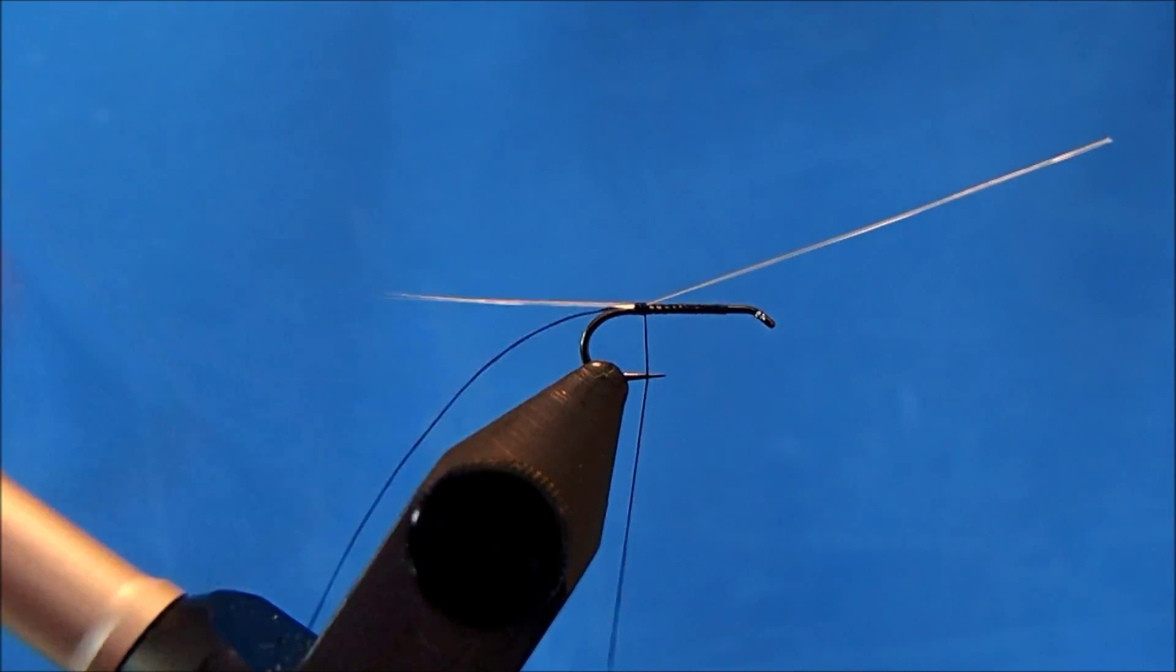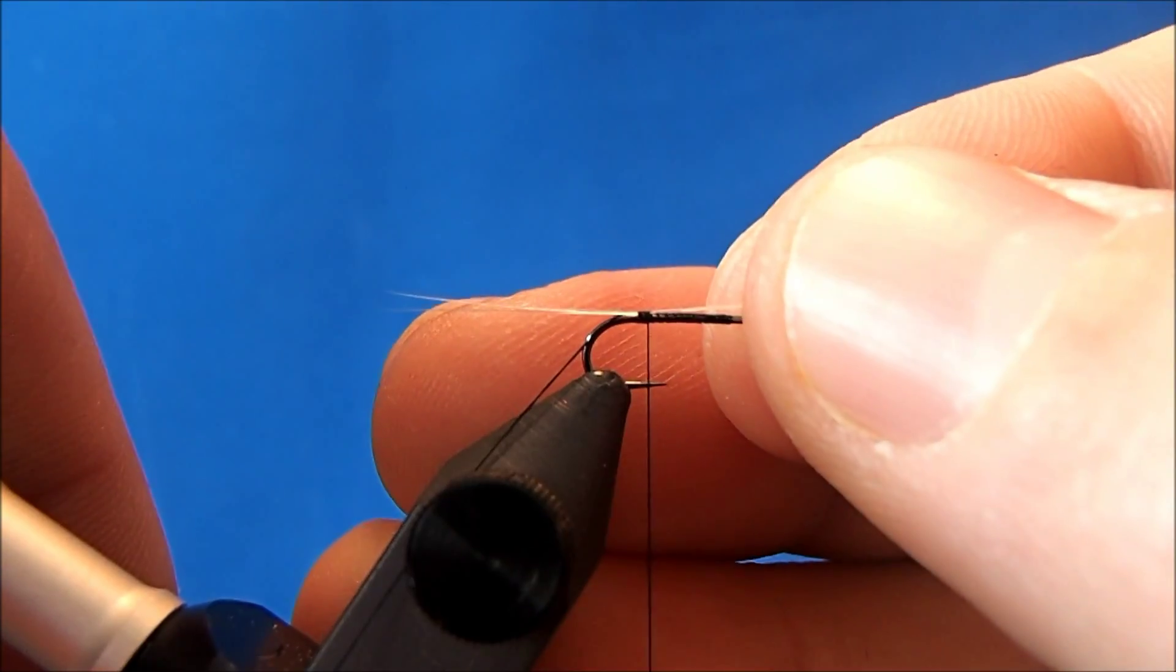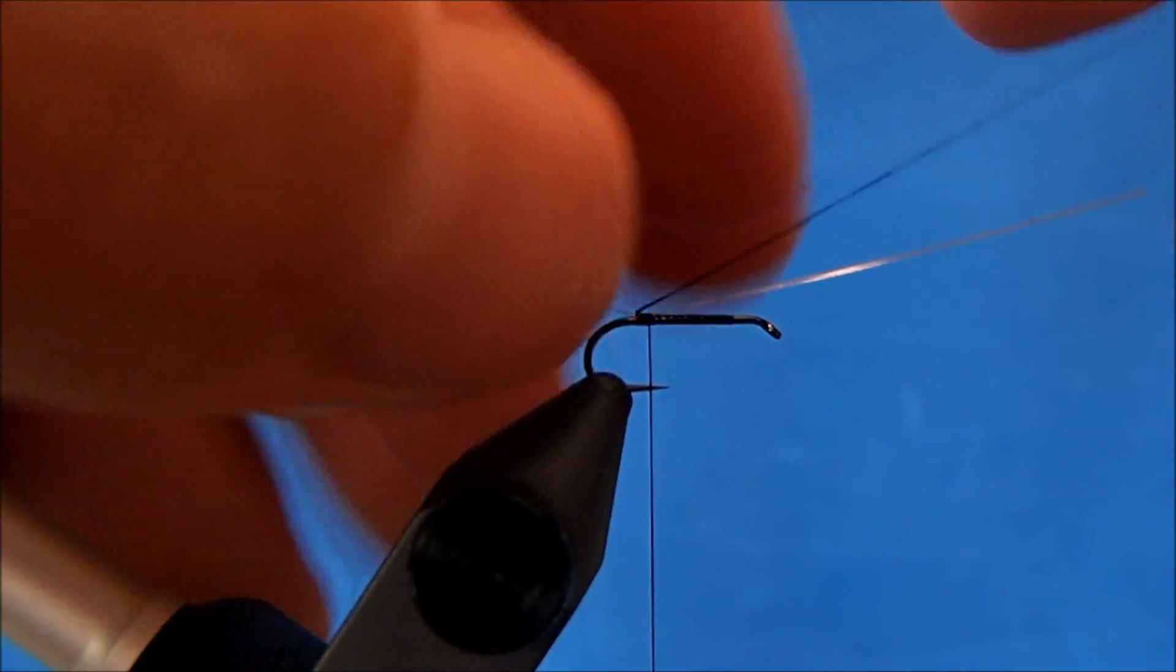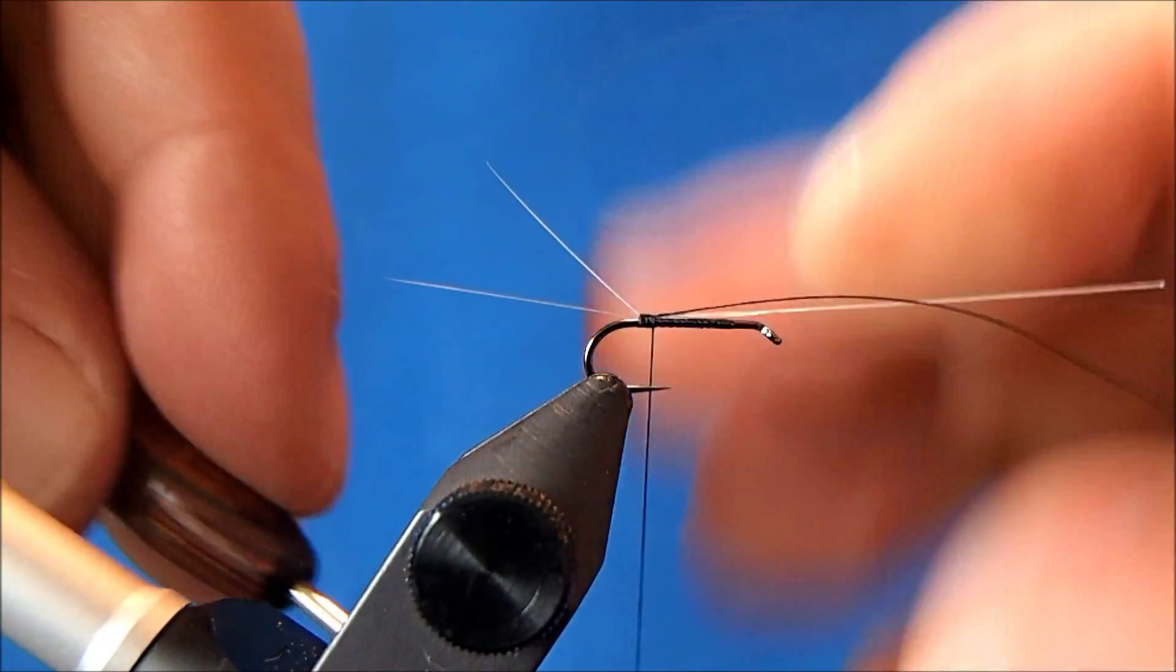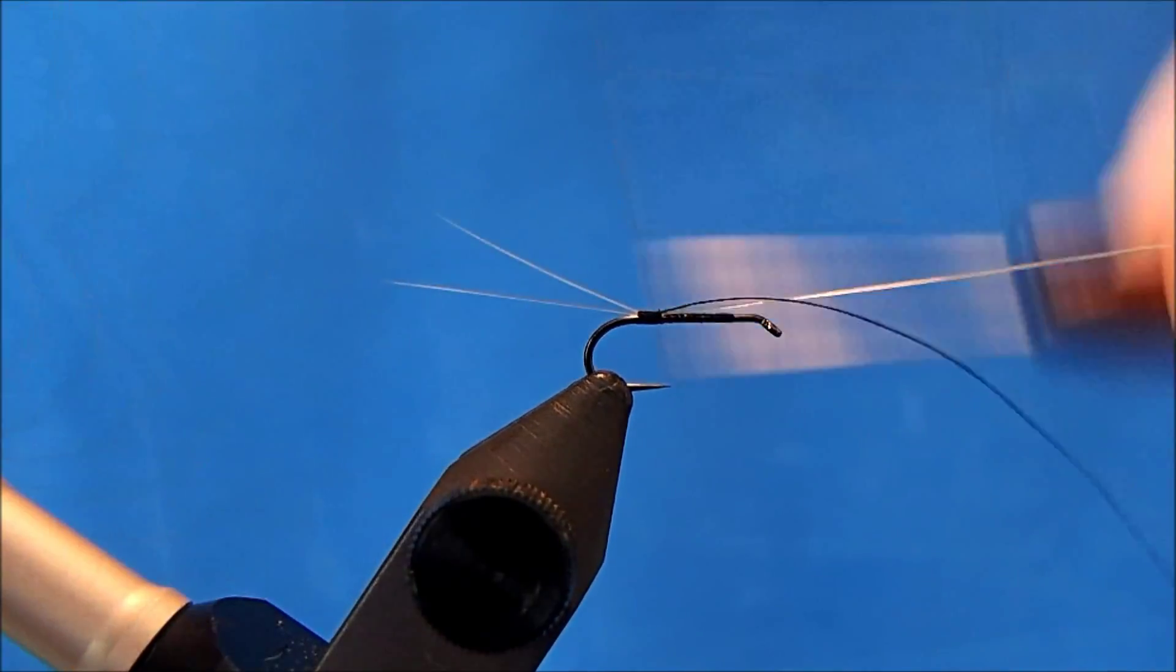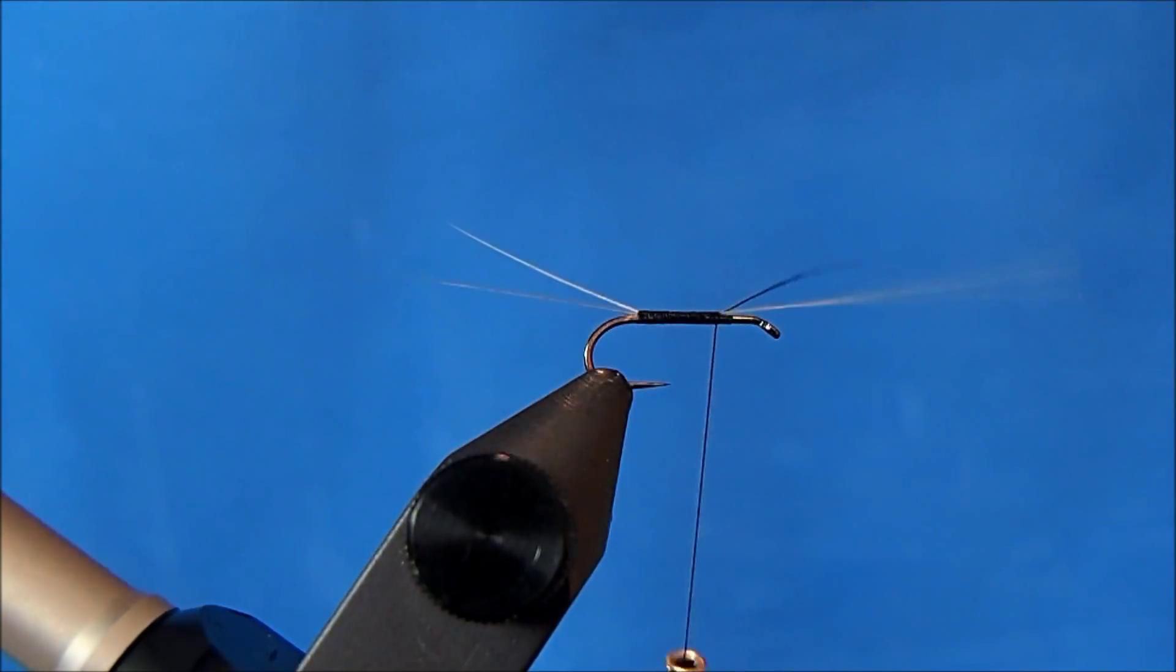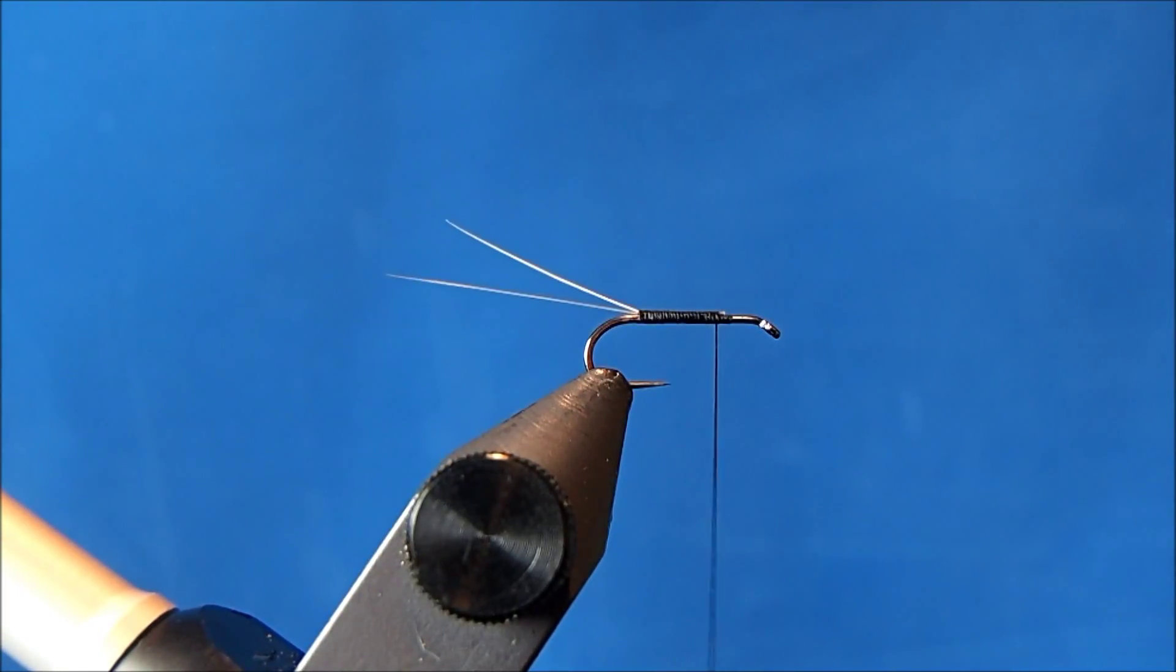You'll notice that these tails are clumped together, so one thing that you can do to make them separate is just to push up and then they'll separate from one another. Now you can take that tag end of thread that you left on through and it'll keep them split. Now I'll work my thread up and tie everything in together just so that it has a uniform body to it, and then I can trim that tag off.